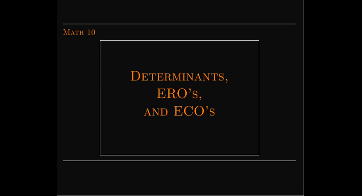In this short video, we're going to introduce our first technique — the most practical method for calculating determinants. Some variant of what we're going to talk about is what is used by any modern technology to calculate the determinant of a matrix. We're going to look at the relationship between determinants, EROs (elementary row operations), and ECOs (elementary column operations).